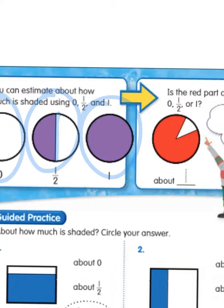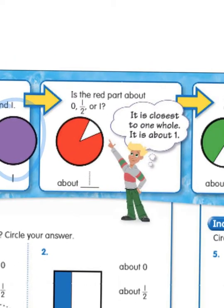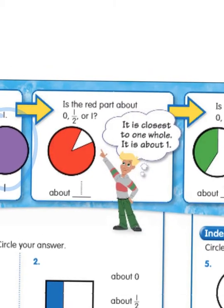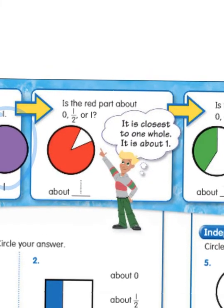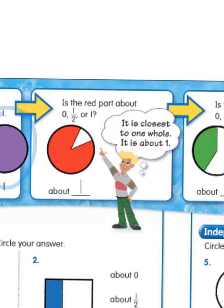So let's look at this one right here. Is the red part about zero, half, or one? Well, I'm looking at it. It is closest to one whole. So it's about one. So on the line, I would write about one.